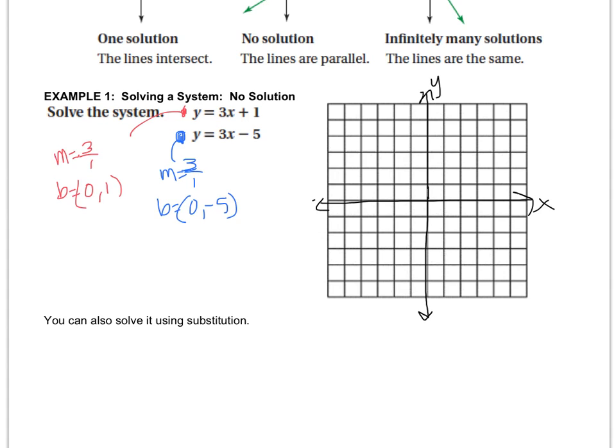So first find the value of b, plot it on the y-axis, now move the slope up 3, right 1. And I'll also go down 3, left 1, so I can have a very accurate line, and here's the line.